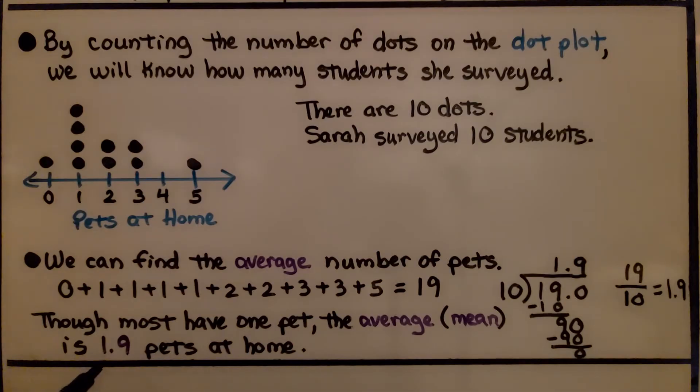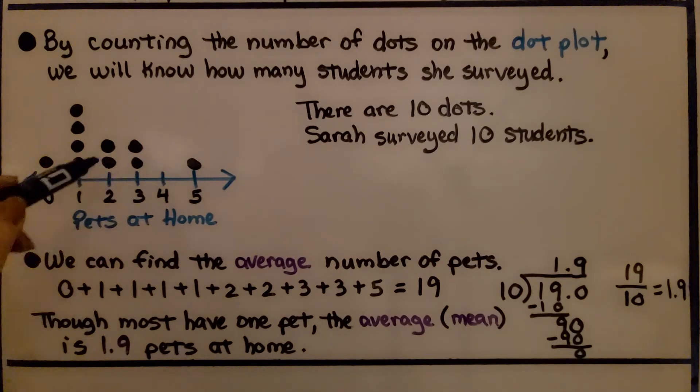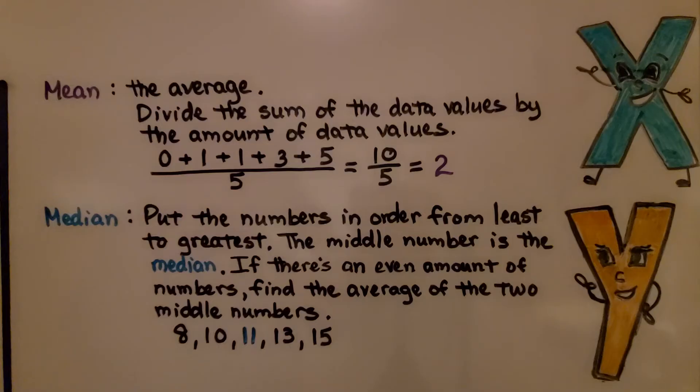Now you can't have 1.9 pets, can you? There's not nine tenths of a pet at someone's house. So we could round this off really and say that it averages about two pets per person. Even though there's more dots on the one, these 2, 3, and 5 answers raised the average up to be around two.